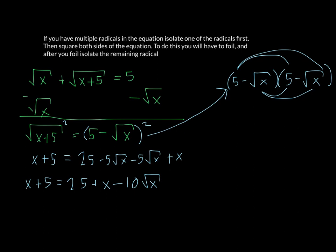Now we're going to want to isolate the remaining variable. So I'm going to subtract the 25 over, and I will also subtract the x over. So in here, we are left with negative 20 equals negative 10 square root of x.